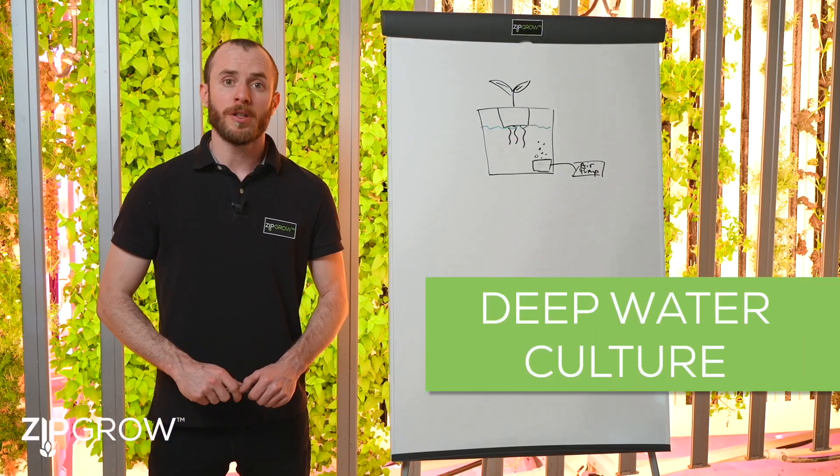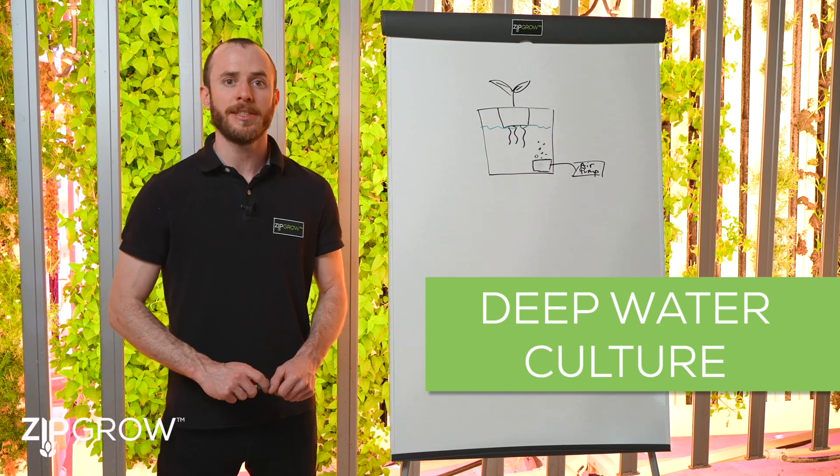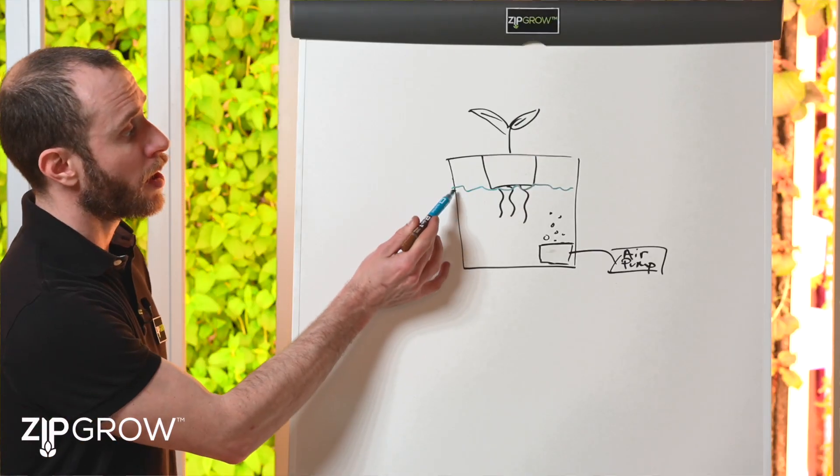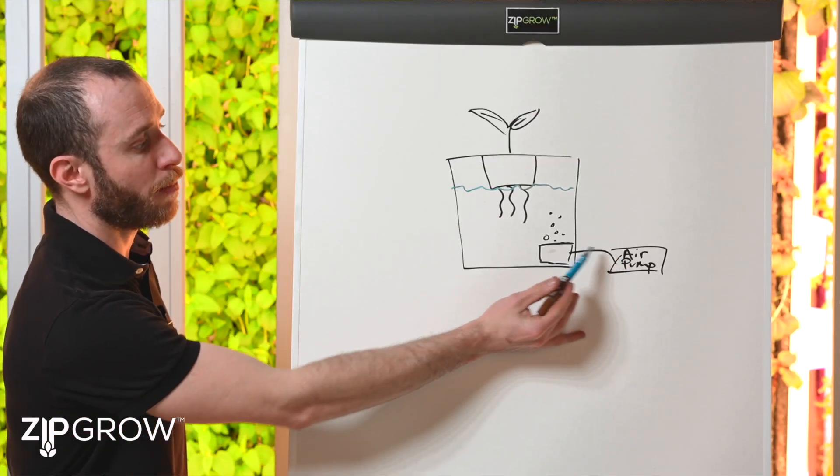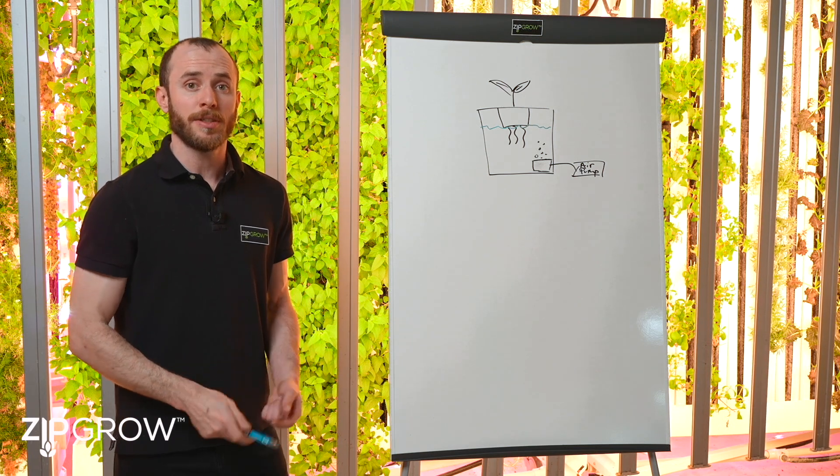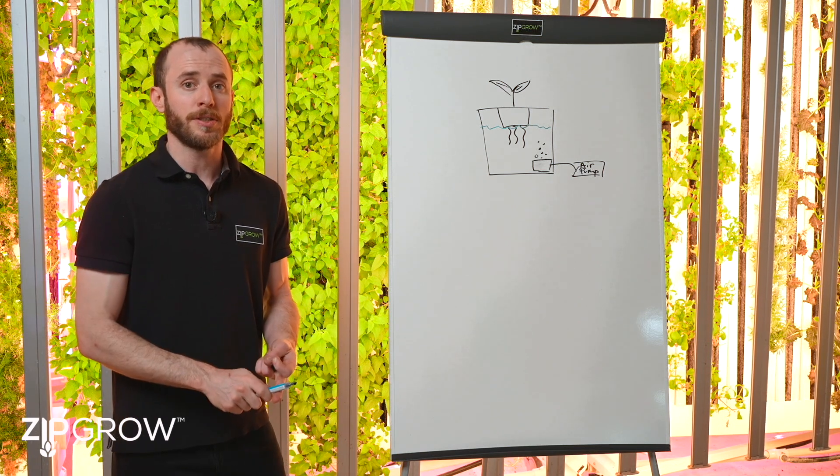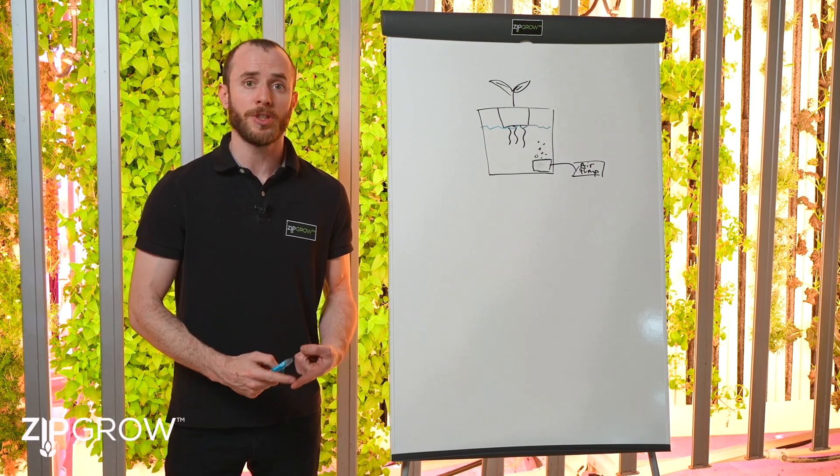Deep water culture, or DWC for short, is becoming increasingly popular due to its simplicity and few moving parts. The roots are constantly suspended in a nutrient solution. Aeration is provided by an air pump and an air stone. This allows the roots to have constant supplies of oxygen and nutrients. These are great for beginners as all you need to worry about is the strength of the solution and the pH.